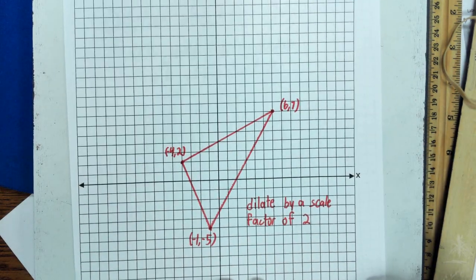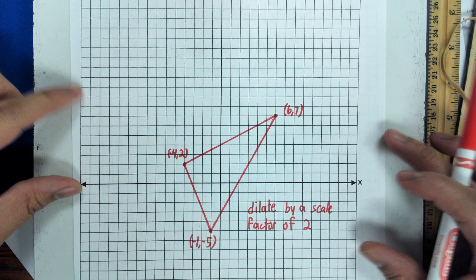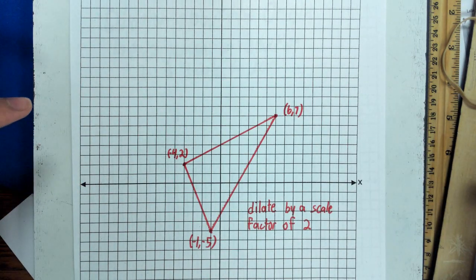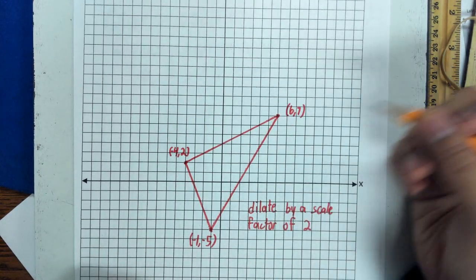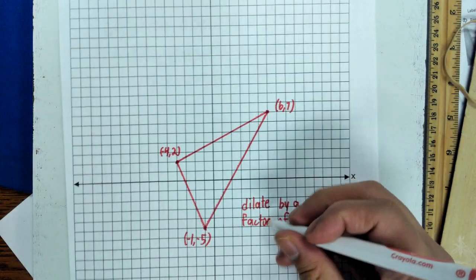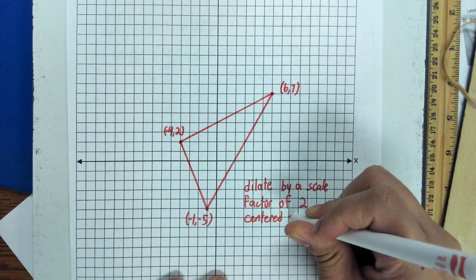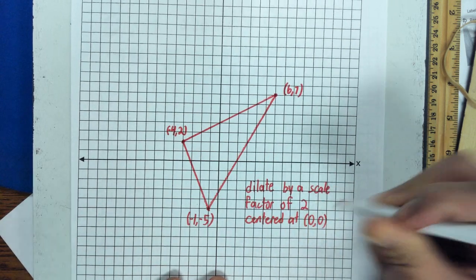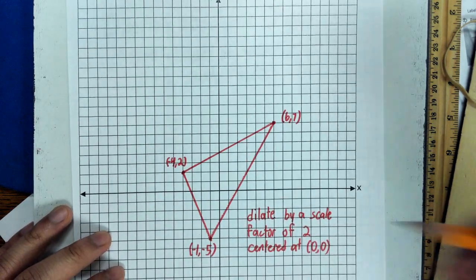I will show you two ways to do dilation by a scale factor. The first method is by counting — we look at the points and count how far away they are from the center. In this case, our center is at the origin, zero zero.